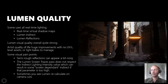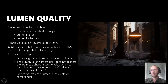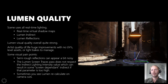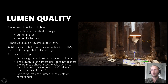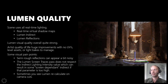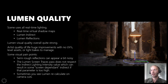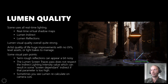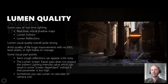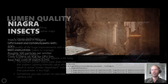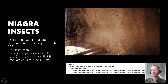Jumping into Lumen quality — our AlphaPoint demo uses all real-time lighting. It's running real-time virtual shadow maps, Lumen Indirect, and Lumen Reflections. You can see here I'm moving the light around and you can see all the reflections updating. Lumen visual quality is also using Niagara to create things like insects to add life to the world.